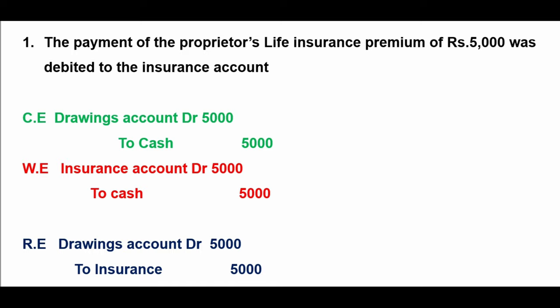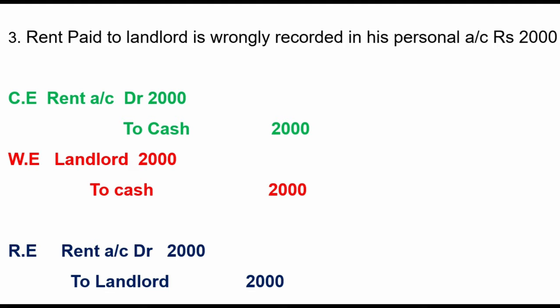Next: rent paid to landlord is wrongly recorded in his personal account. The correct journal entry is rent account debit to cash, but it was wrongly recorded as landlord account debit to cash. For rectification, we need to debit the rent account and credit the landlord account to cancel the wrong debit. So the rectifying journal entry is: rent account debit to landlord.